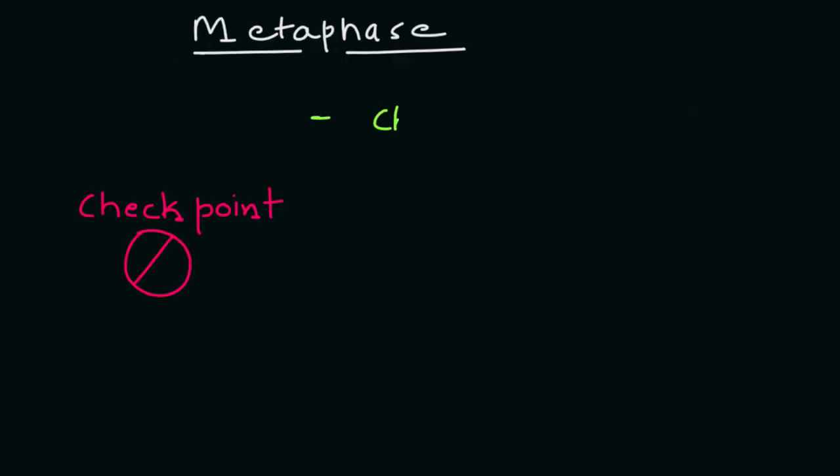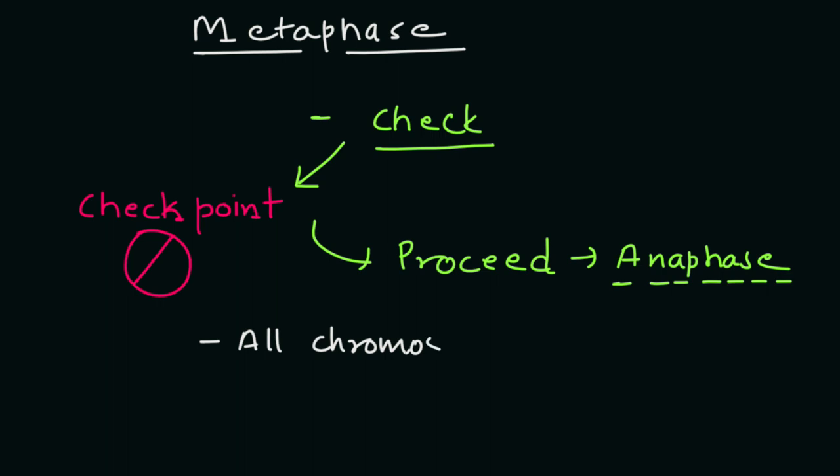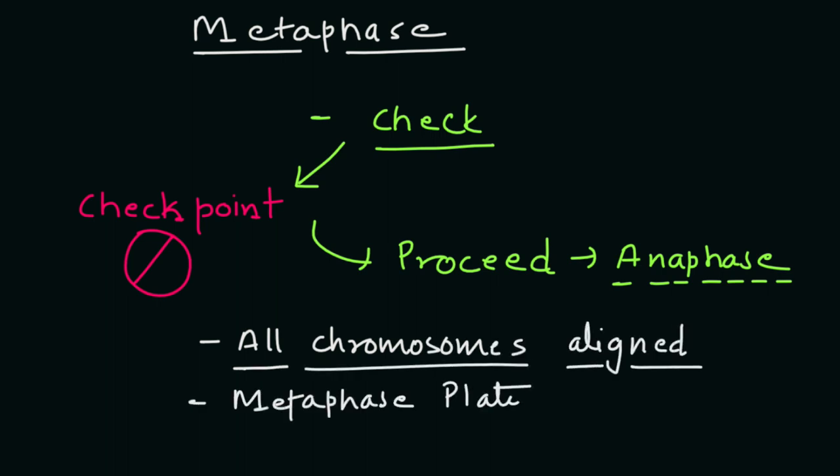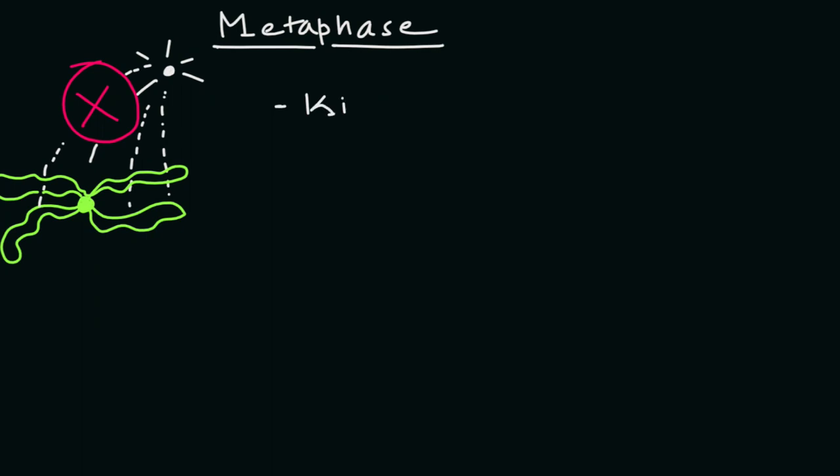The metaphase stage is an important checkpoint in the cell cycle, as it only proceeds to anaphase once all chromosomes have been aligned perfectly at the metaphase plate and each kinetochore is properly attached to the bundle of microtubules.